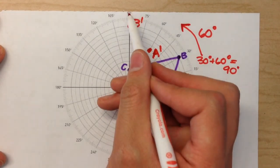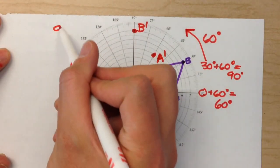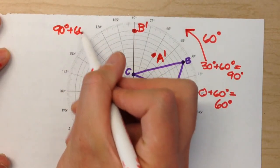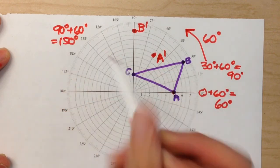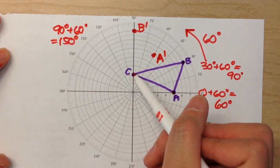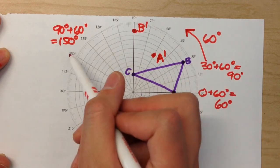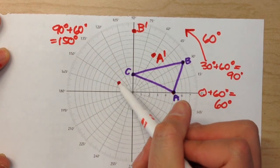C is currently at 90 degrees. 90 degrees plus 60 degrees is 150 degrees. So I need to rotate this, follow the line until I hit the 150 degree mark. Right there.